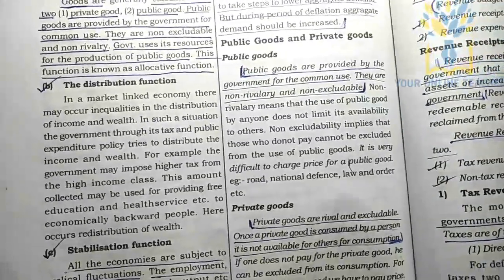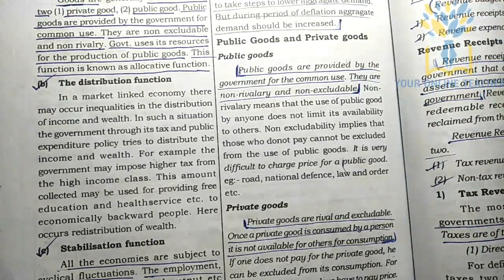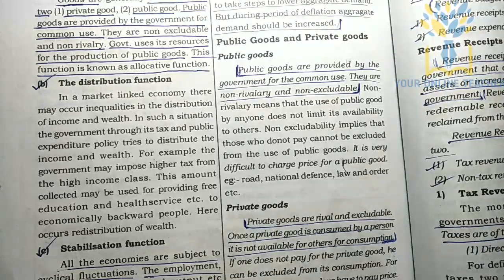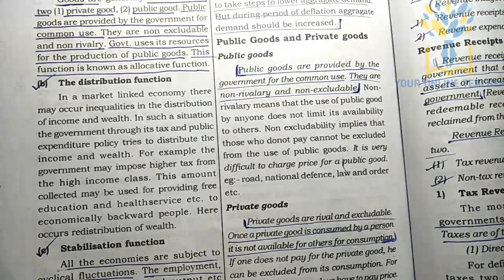Next is the distribution function. Through tax and public expenditure policy, the government redistributes wealth. For example, using tax revenue to provide free education and free health services. This is the distribution function — the redistribution of wealth by the government.